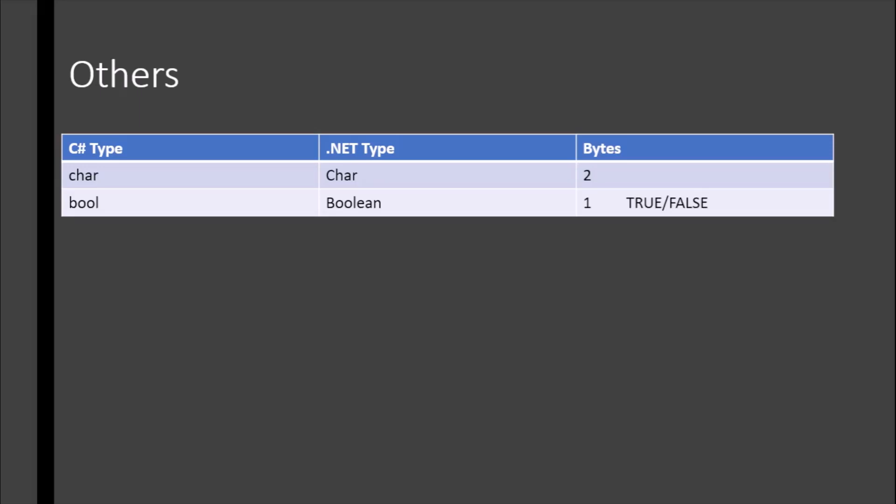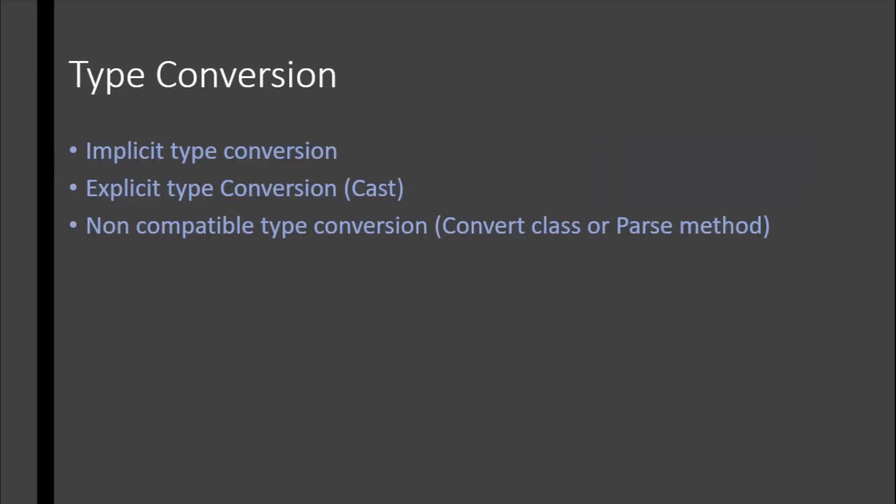Next we have character — in C# 'char' is two bytes. Then boolean, whose value is either true or false. We have three types of type conversion: implicit type conversion, where there is no data loss; explicit type conversion, also called casting, where there is a possibility of data loss; and non-compatible type conversion, where we use the Convert class or the Parse method.